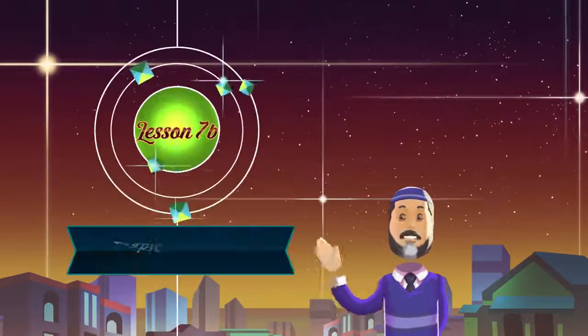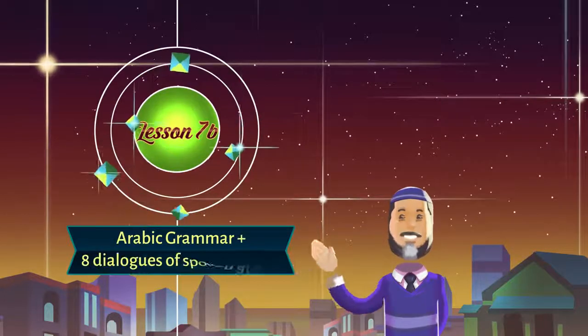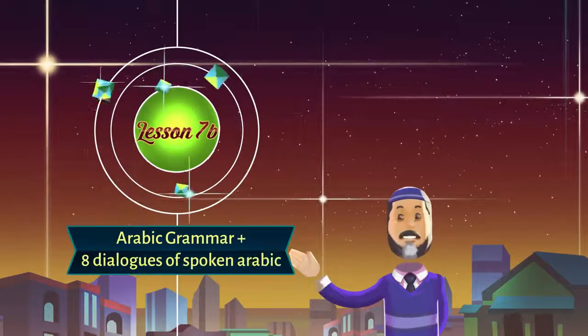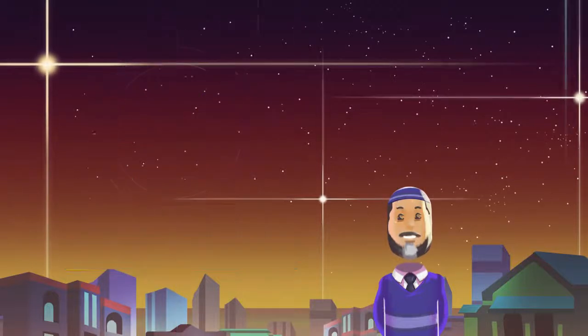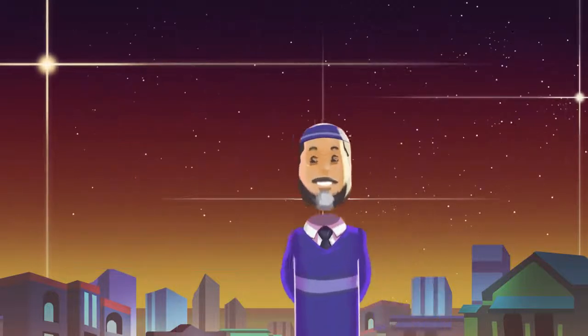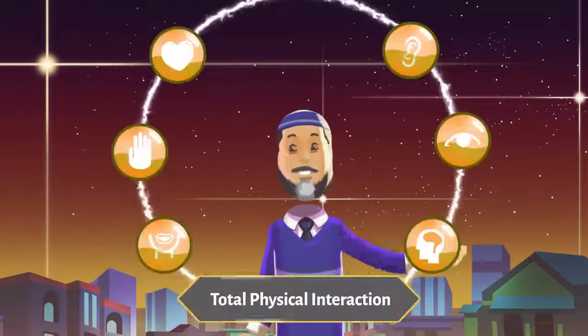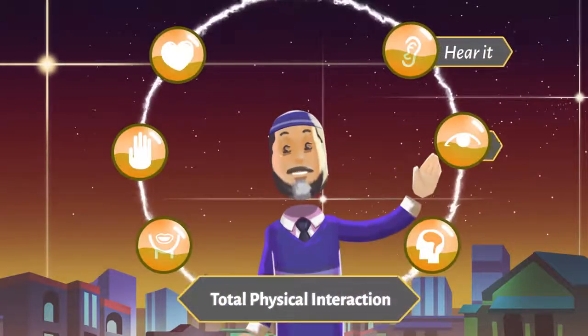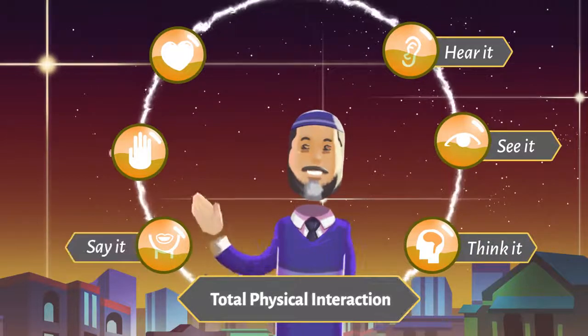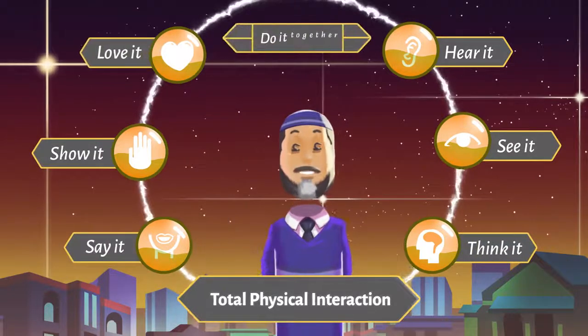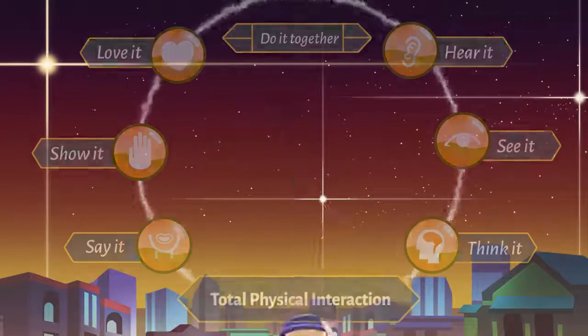Lesson number 7b, in which we will learn Arabic grammar plus 8 dialogues of spoken Arabic. Remember to use TPI, which is: hear it, see it, think it, say it, show it, love it and do it together.